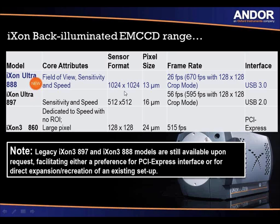The iXon Ultra 897 is a 512 by 512 format with 16-micron pixels. You can achieve 56 frames per second with a full field of view, or using crop mode at 128 by 128 you can get 595 frames per second. This camera uses USB 2. The smallest sensor in the range is the 128 by 128 sensor with 24-micron pixels, ideal for collecting a lot of light but not for highly resolvable images — more suited to quantitative applications. It achieves very fast frame rates and uses a PCI Express interface.